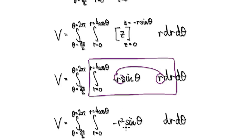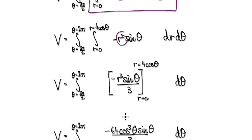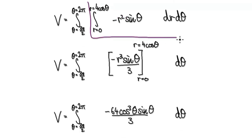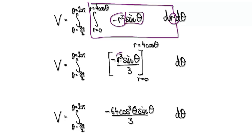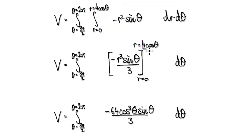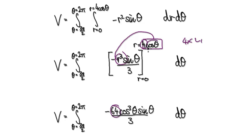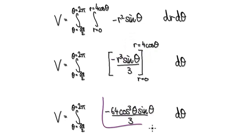We've got to integrate r squared times negative sinθ with respect to r. The sinθ block is a constant, so integrating gives us negative r cubed over 3, evaluated from 0 to 4 cosθ. When you cube 4 cosθ: 4 cubed is 64, so you get 64 cos cubed θ divided by 3. Putting 0 into the expression gives 0, so we are left with that result.